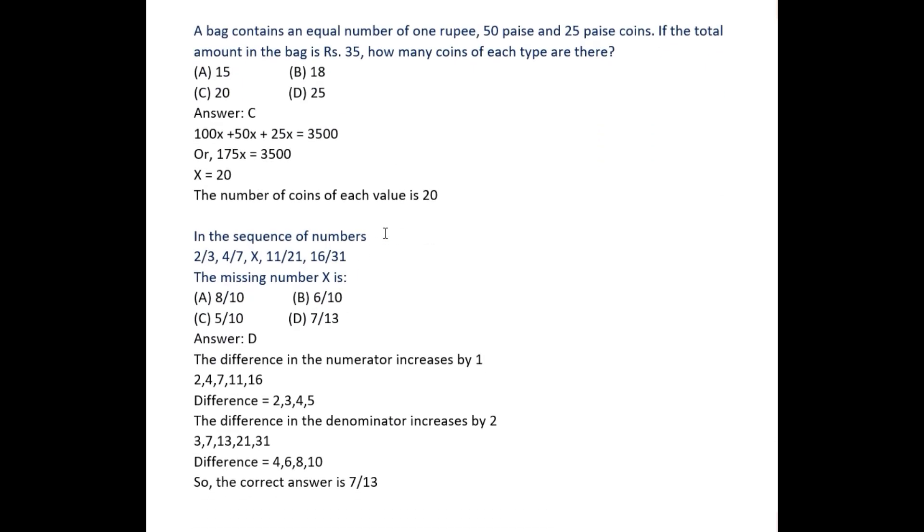Come to the next problem. A bag contains an equal number of 1 rupee, 50 paisa, and 25 paisa coins. If the total amount in the bag is rupees 35, how many coins of each type are there? The condition says equal number.